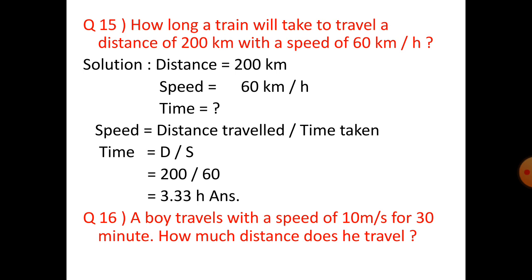Question 15: How long will a train take to travel a distance of 200 kilometers with a speed of 60 kilometers per hour? Distance is 200 kilometers, speed is 60 km/h, and we need to find time. Speed equals distance divided by time taken, so time equals D by S, which is 200 by 60, equals 3.33 hours.